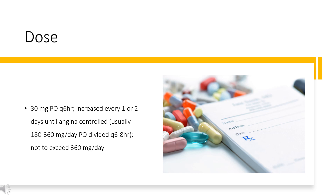Cartazem-CD, Cartia-XT, Dilt-CD: 120 to 180 mg/day PO, titrate over 7 to 14 days; maintenance range usually 120 to 320 mg/day, not to exceed 480 mg per day. Dilacore-XR, Dilt-XR: 120 mg/day PO, titrate after 7 to 14 days; maintenance range usually 120 to 320 mg/day, not to exceed 540 mg per day.